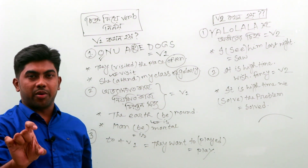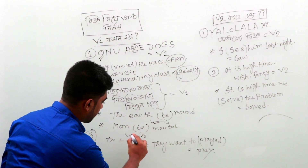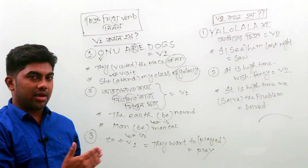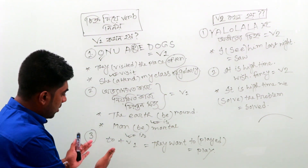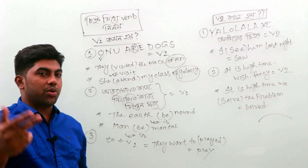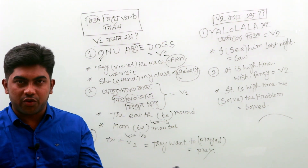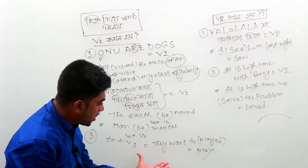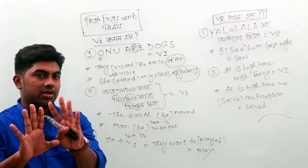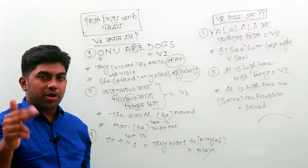The present form is used in certain situations. After prepositions like 'to,' 'for,' and others, we use the present form — V1. For example: they want to play. After 'to,' we use the base present form.